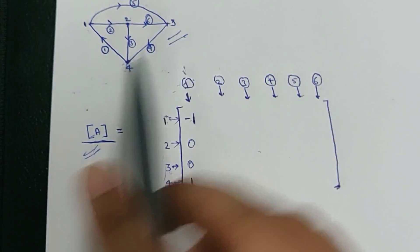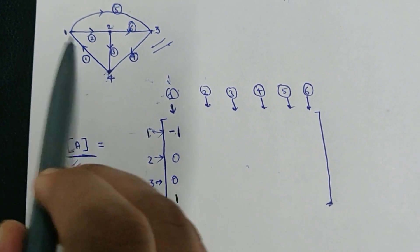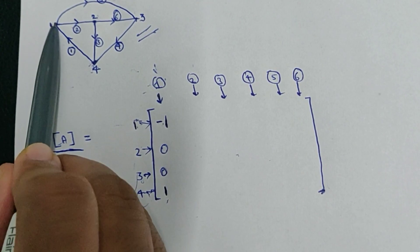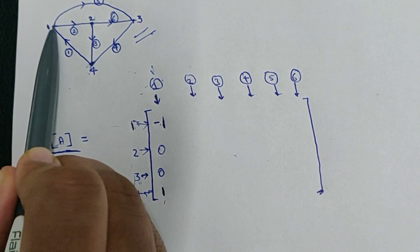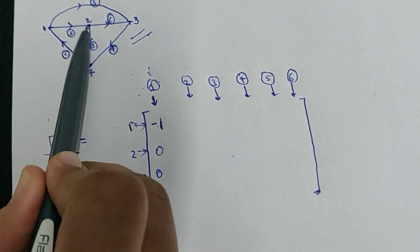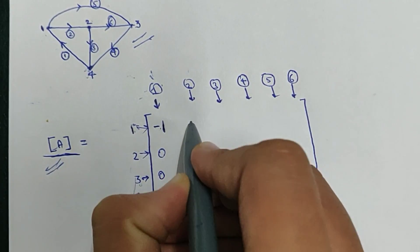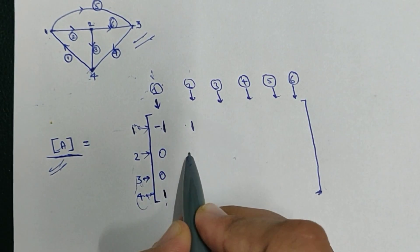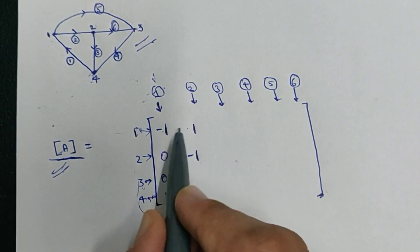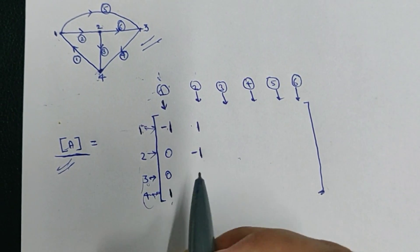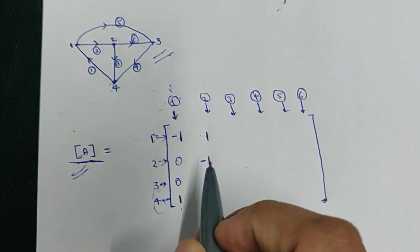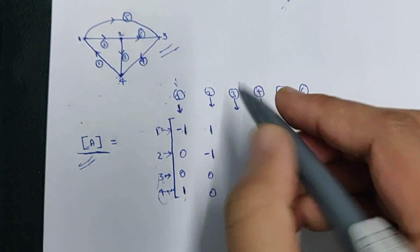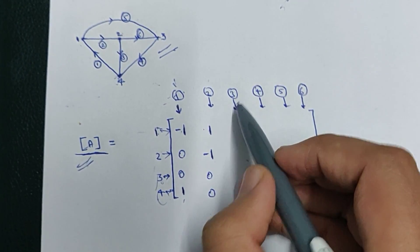Now I'll consider the next branch. In the second branch, the current is flowing from node 1 to node 2. From node 1, therefore +1; to node 2, therefore -1. Nodes 3 and 4 don't have any involvement, so their values will be zero.